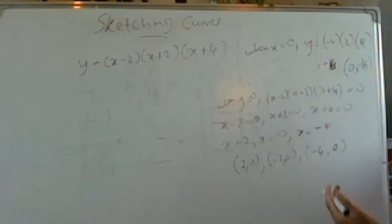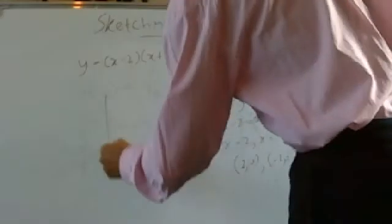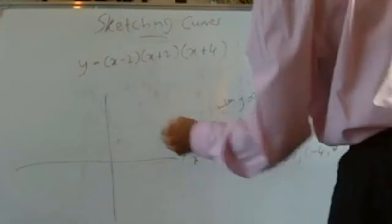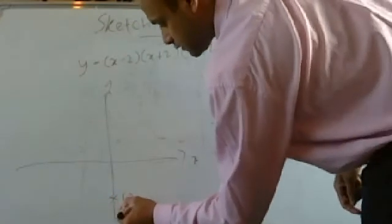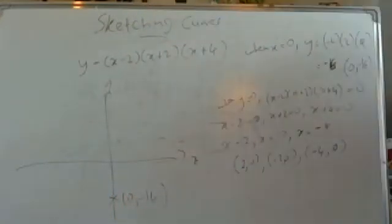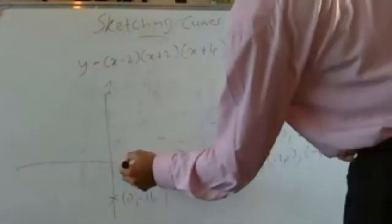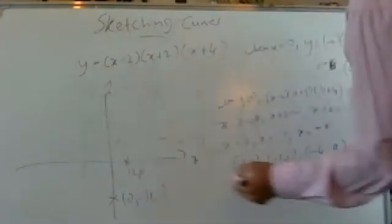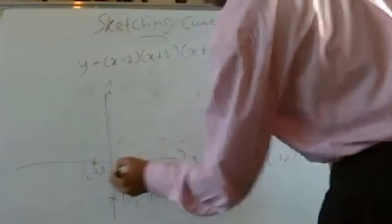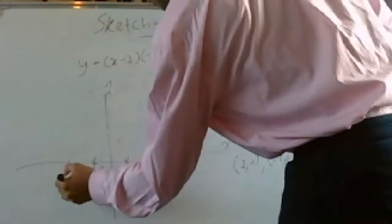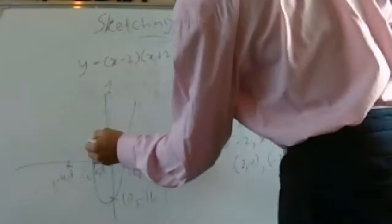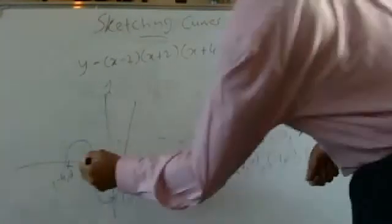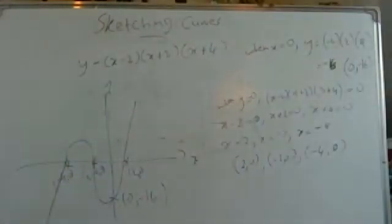Now let's plot these coordinates and sketch the graph. We have our x and y axes. First point is (0, minus 16), then (2, 0), (minus 2, 0), and (minus 4, 0). Connecting these gives us the cubic curve — it goes up through the points like that. That's your cubic function.